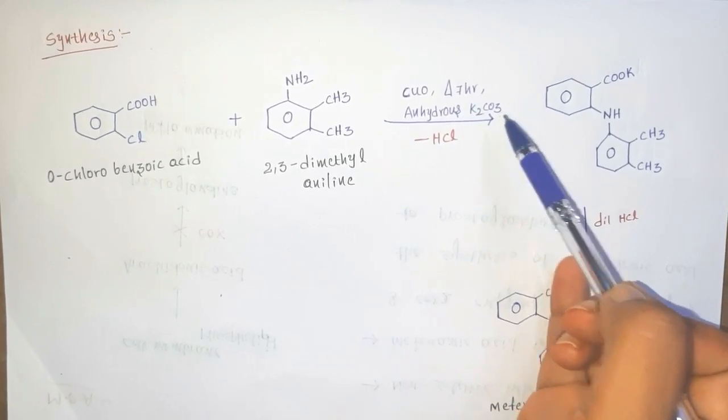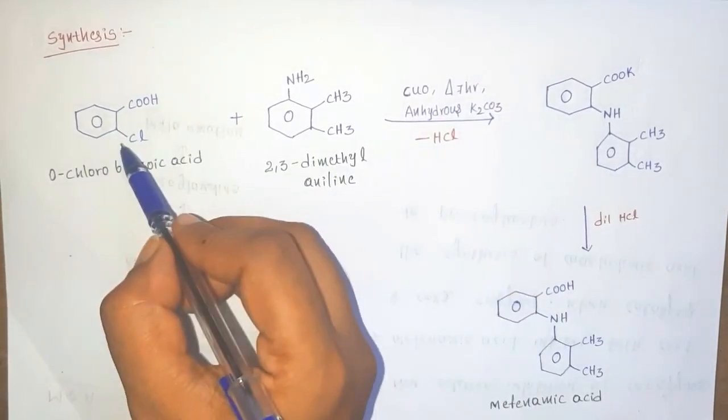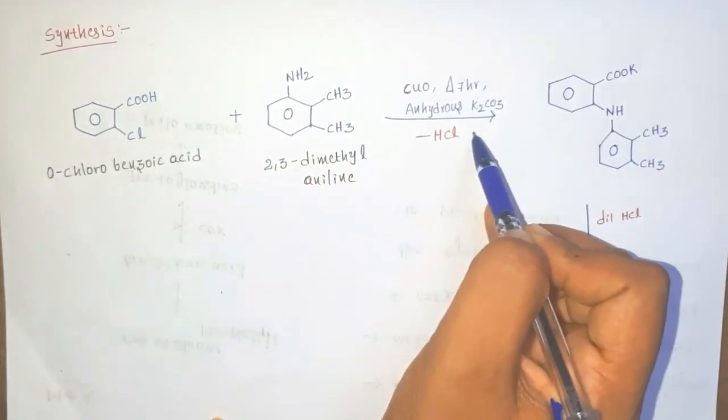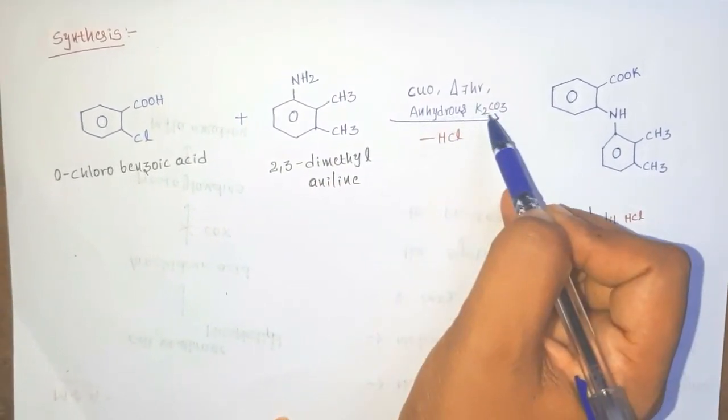So in this reaction, this chlorine and this H, HCl is eliminated. Upon reaction with potassium carbonate, this hydrogen is replaced with potassium and eliminates potassium bicarbonate.